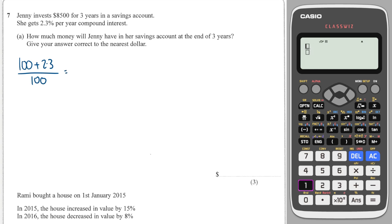On your calculator, do 100 plus 2.3 all over 100, and that is 1.023. Now when we do compound interest per year for a certain number of years, we take the amount invested and multiply it by our multiplier.